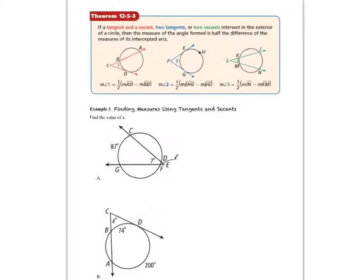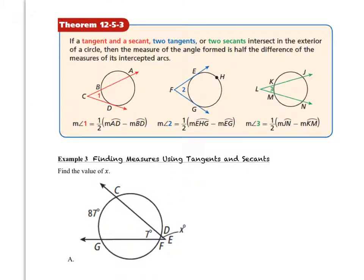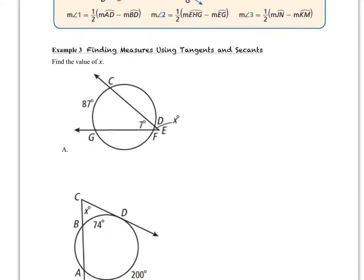This takes us to theorem 12-5-3: if a tangent and a secant, or two tangents, or two secants intersect in the exterior of a circle — notice where the vertex of the angle is on each one — then our formula changes. The measure of the angle is going to be one-half the difference between the intercepted arcs.